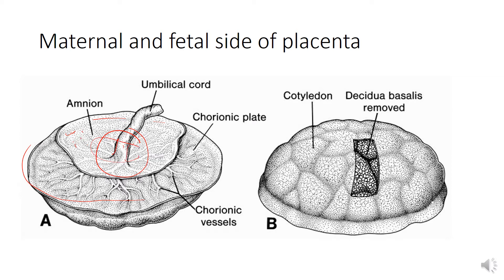Through the translucent amnion, the chorionic plate is visible, and chorionic blood vessels are seen radiating away from the attachment of the umbilical cord. These blood vessels are present in the chorionic plate and are visible underneath the amnion on the fetal surface.